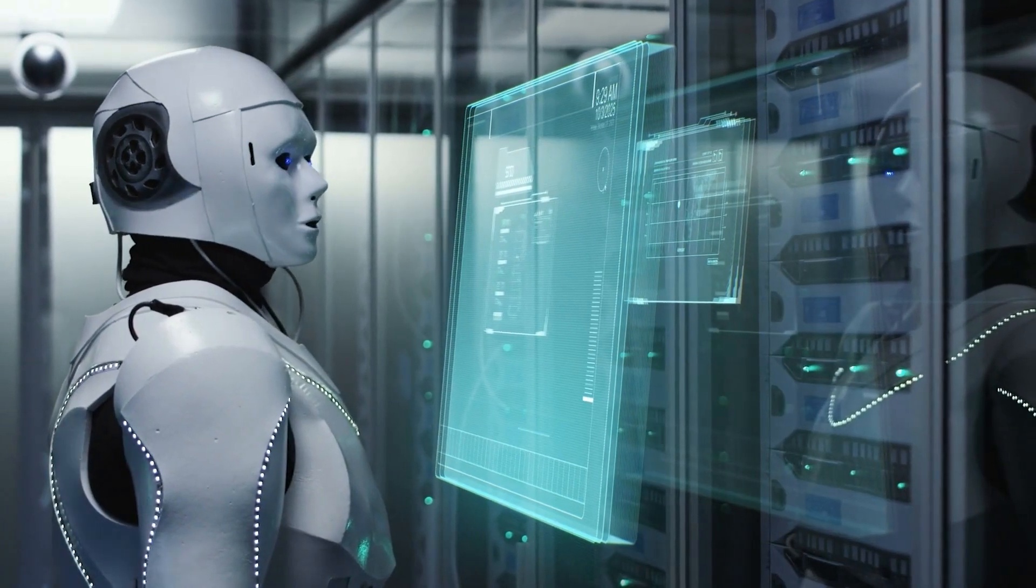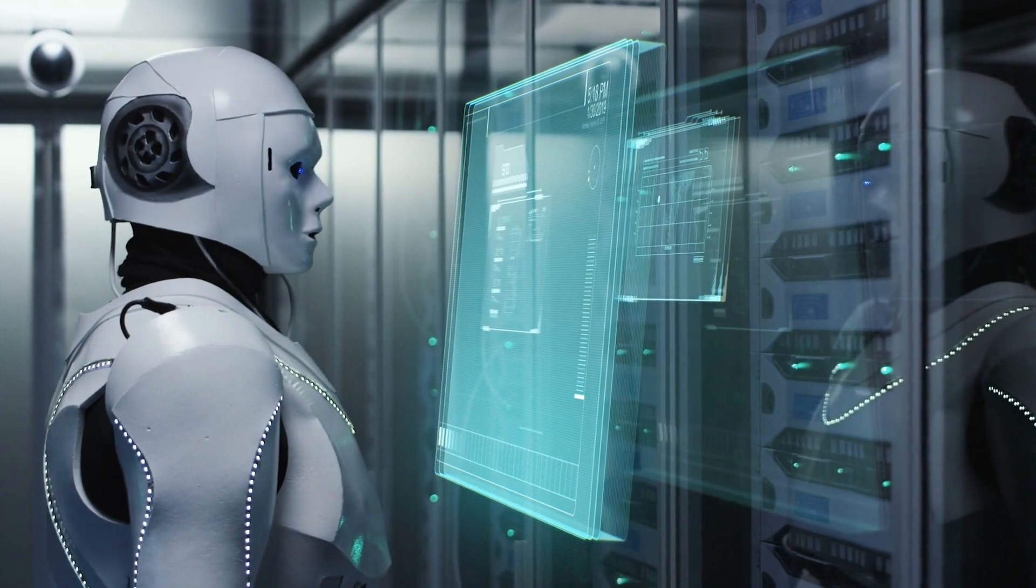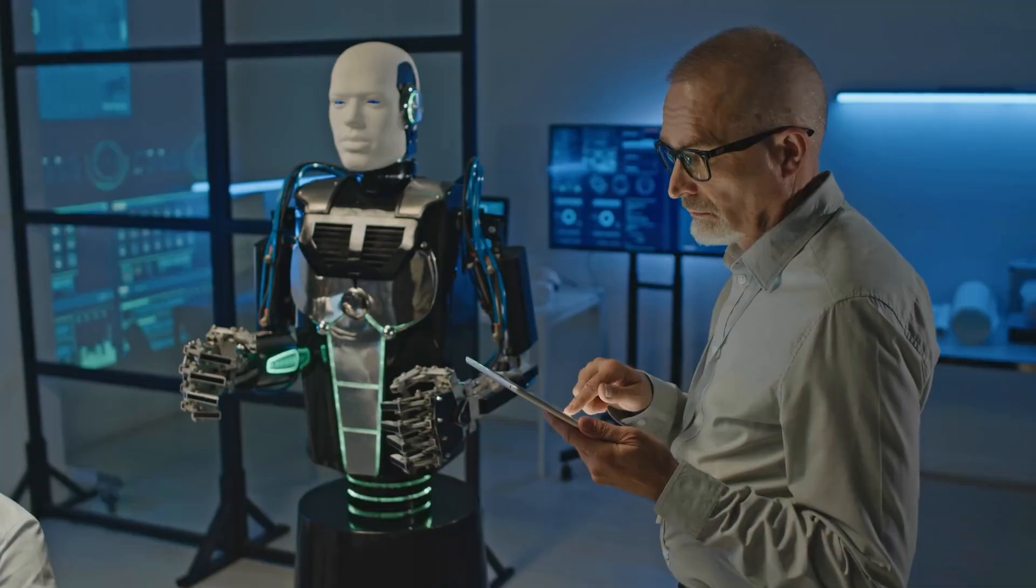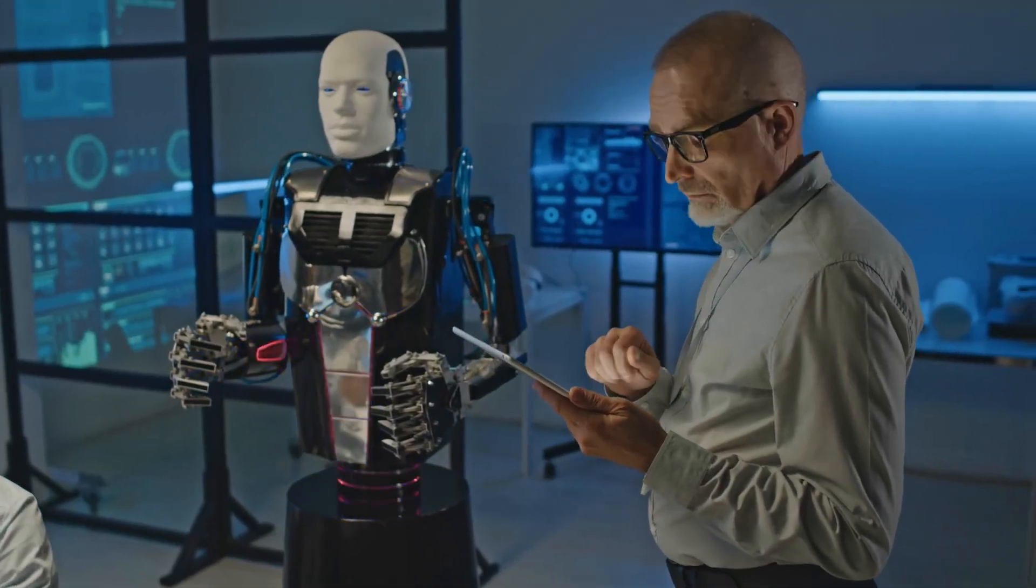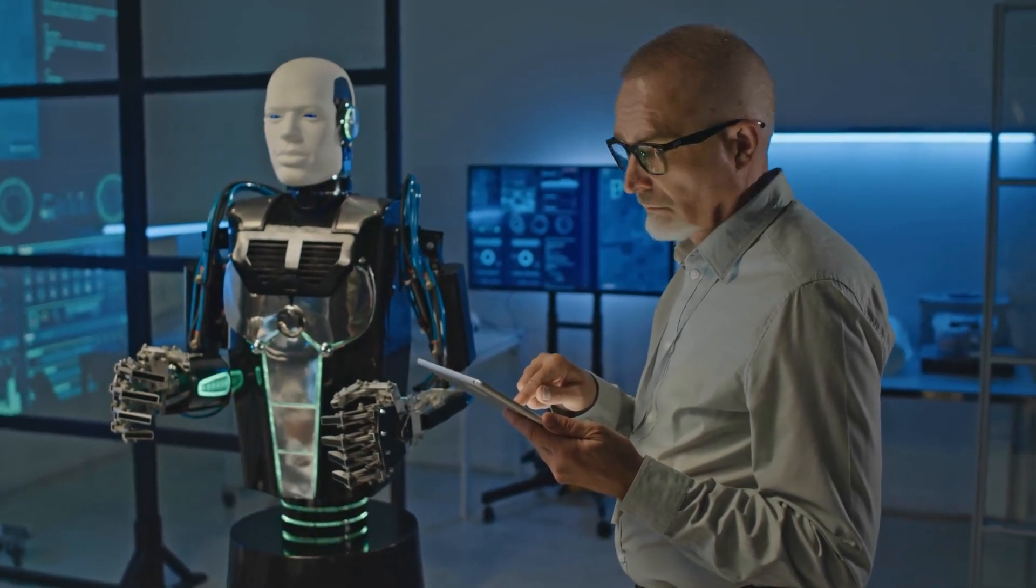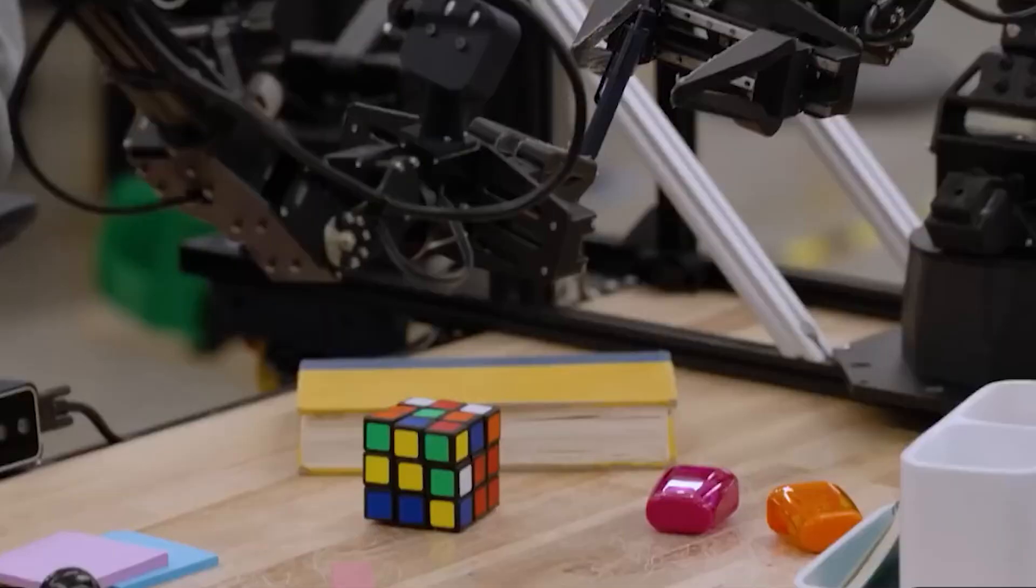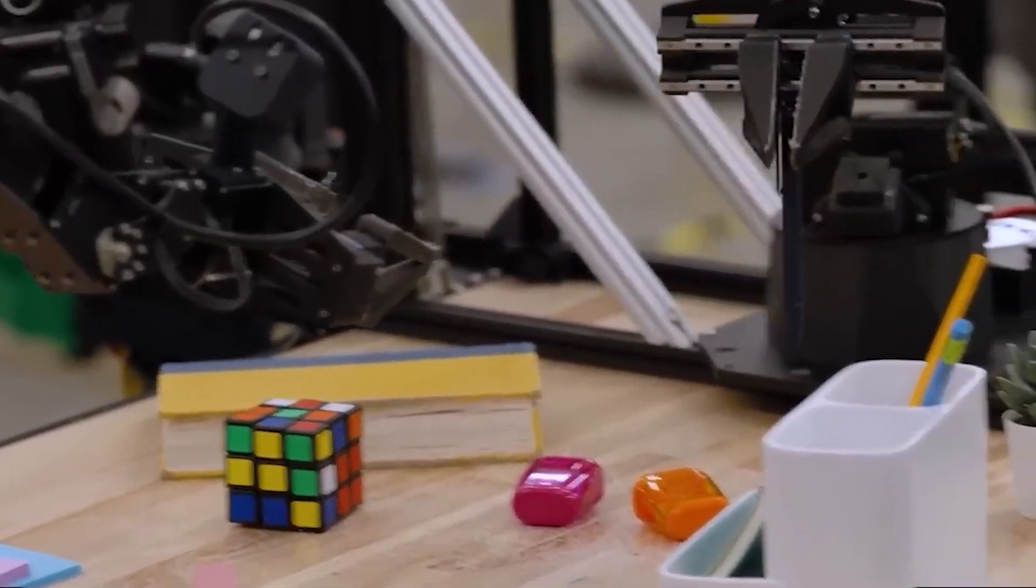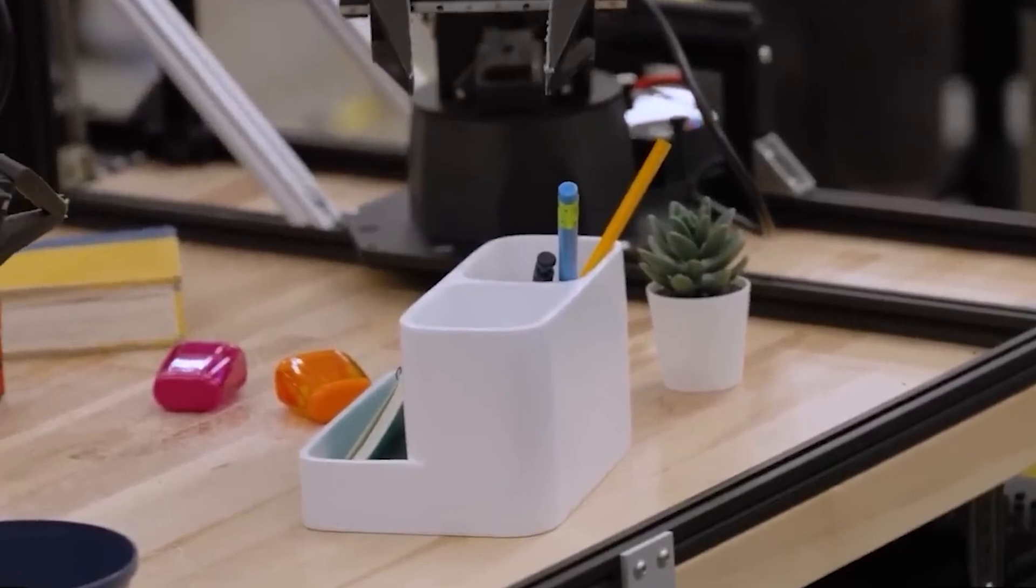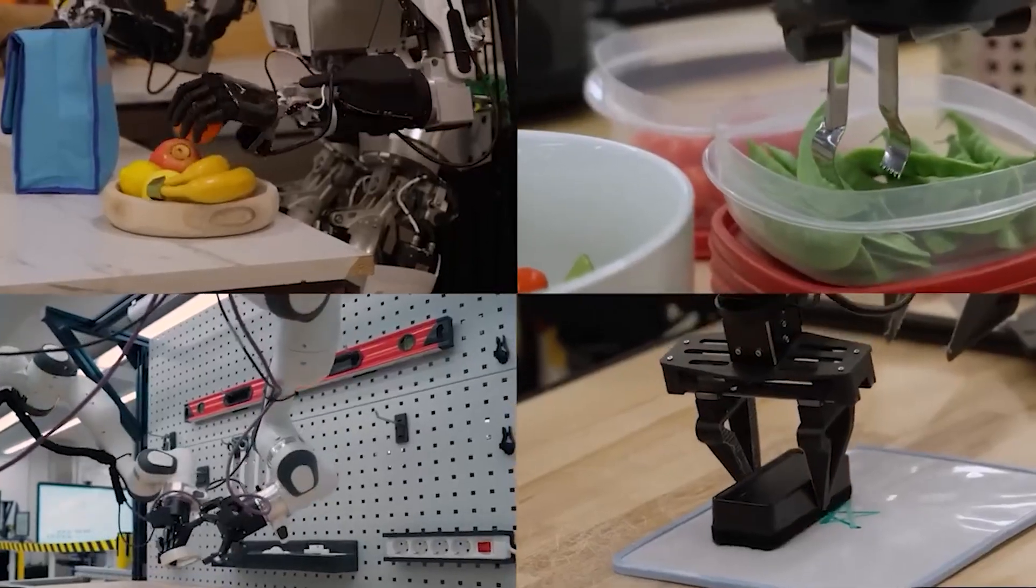These robots don't just execute tasks. They understand context, nuance, and intent. When you tell a Gemini-powered robot, don't put that there, it might fall, it actually comprehends the risk and adjusts accordingly. But before I reveal the full capabilities of these robots, let me explain the technological breakthrough that made this possible.